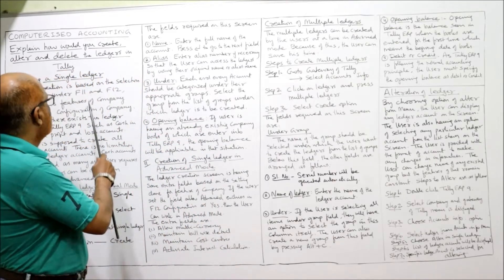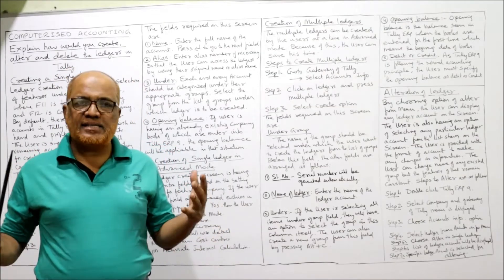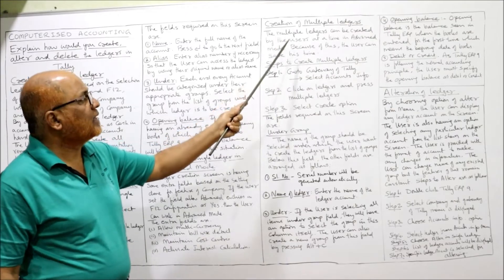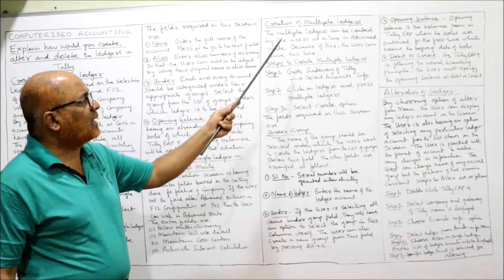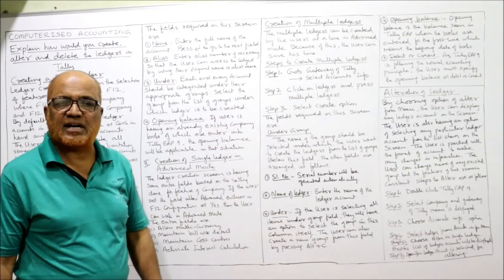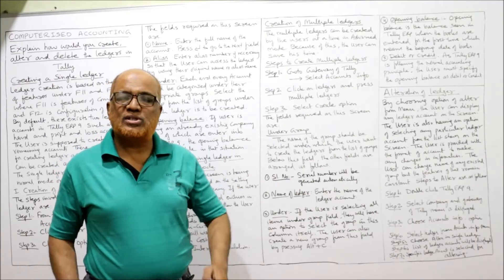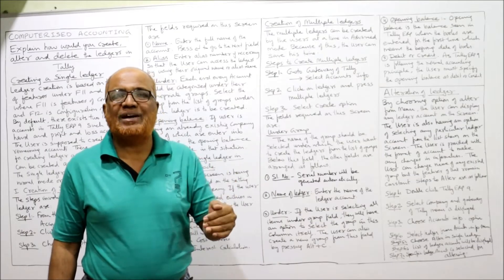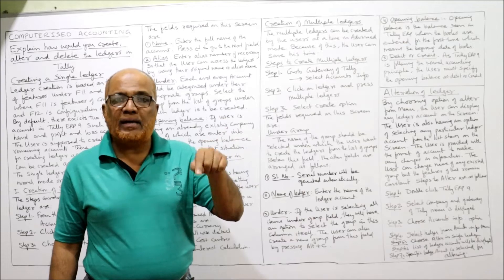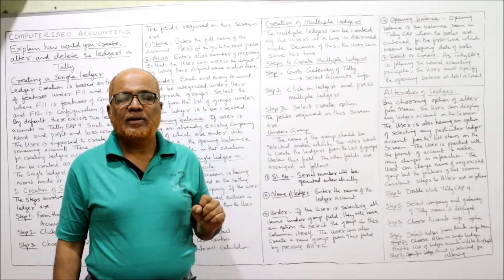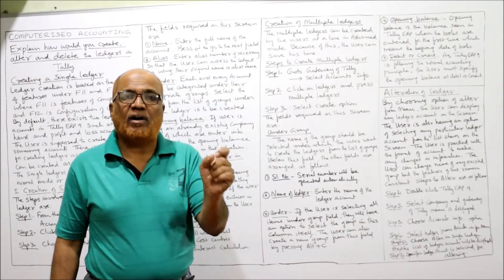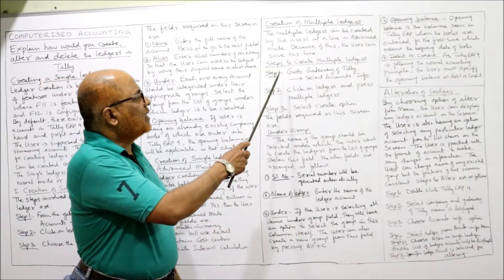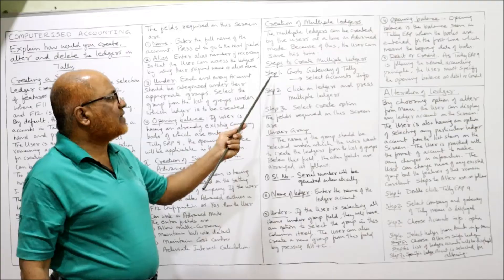Now we move to creation of multiple ledgers. Multiple ledgers can be created by the user at a time in advanced mode, which saves time. Instead of individually opening accounts separately, the user can open multiple accounts in a group. However, in order to open multiple ledgers, F12 mode must be set to advanced mode — only then can multiple ledgers be opened.